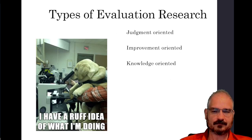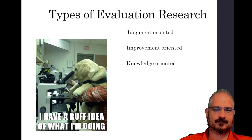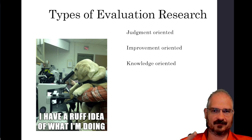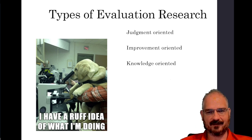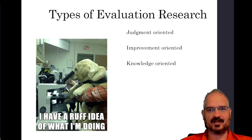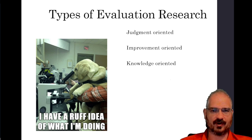When doing evaluation research there are three different standards or goals you can have for what you want to find. These are judgment-oriented evaluation, improvement-oriented evaluation, and knowledge-oriented evaluation. The judgment-oriented evaluation is relatively simple — can we meet this goal, yes or no? Can we change this thing? Is there a reduction in crime or a reduction in noise complaints?